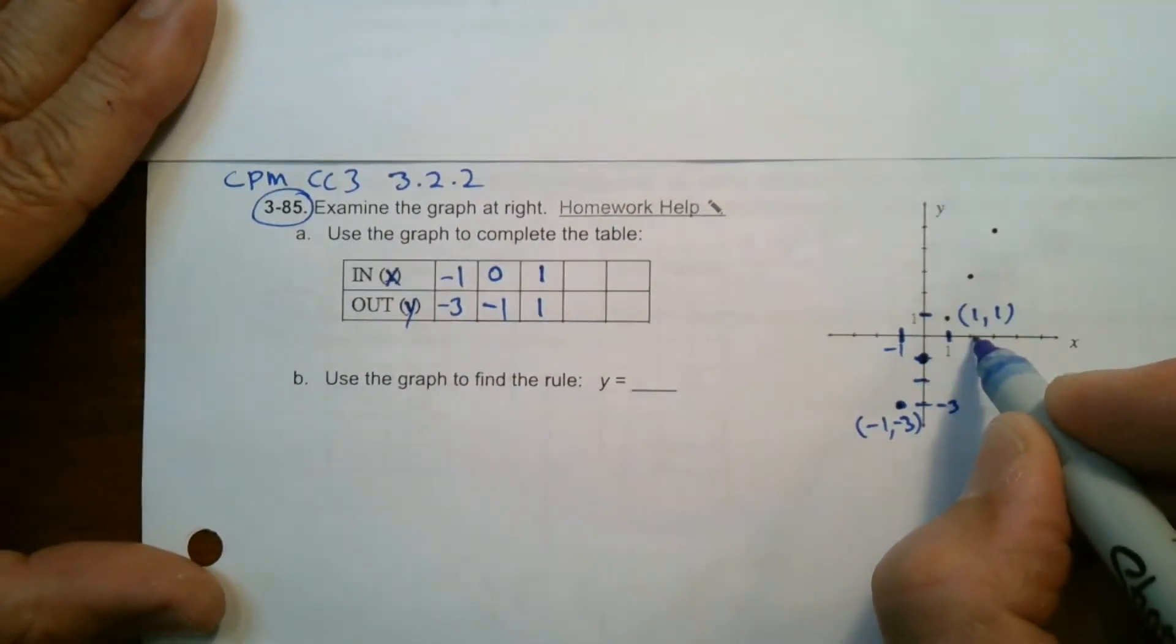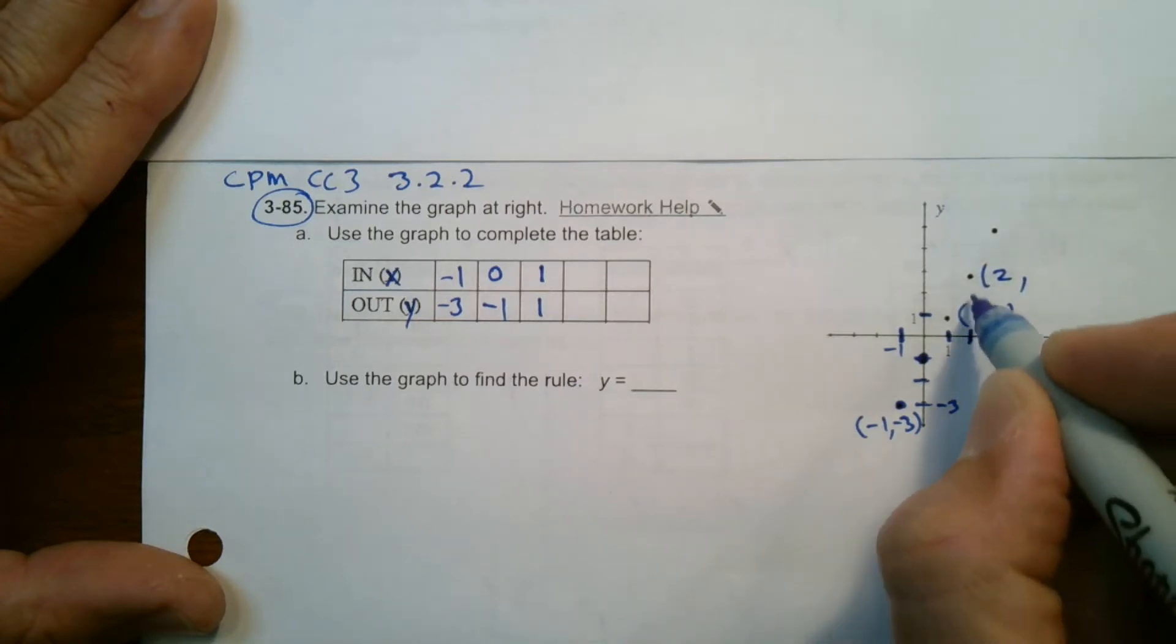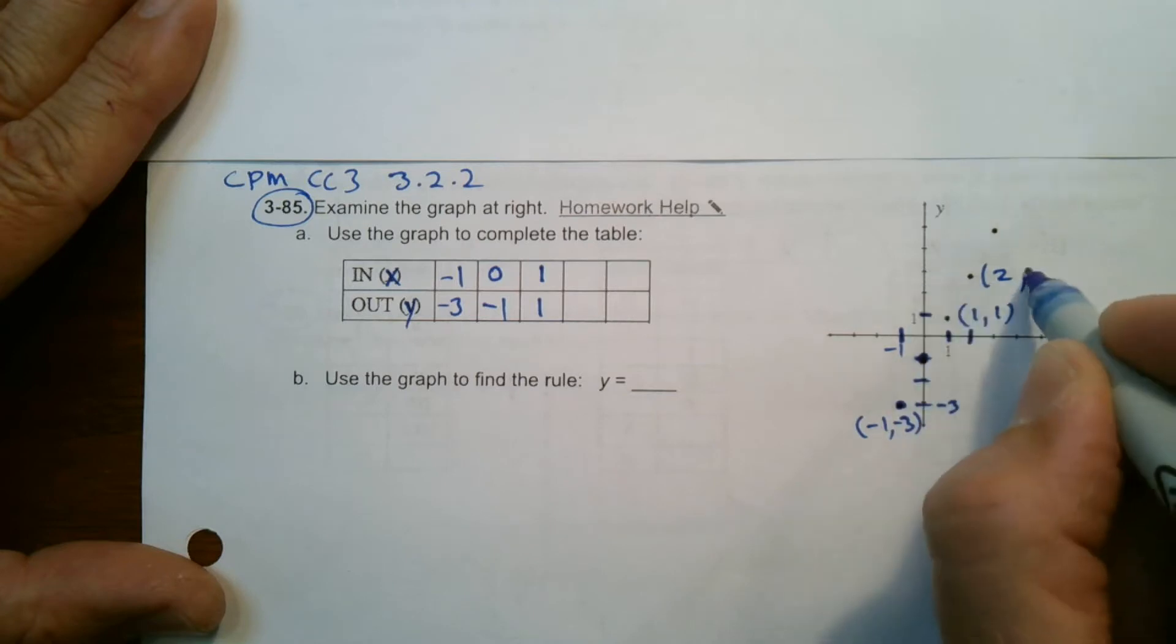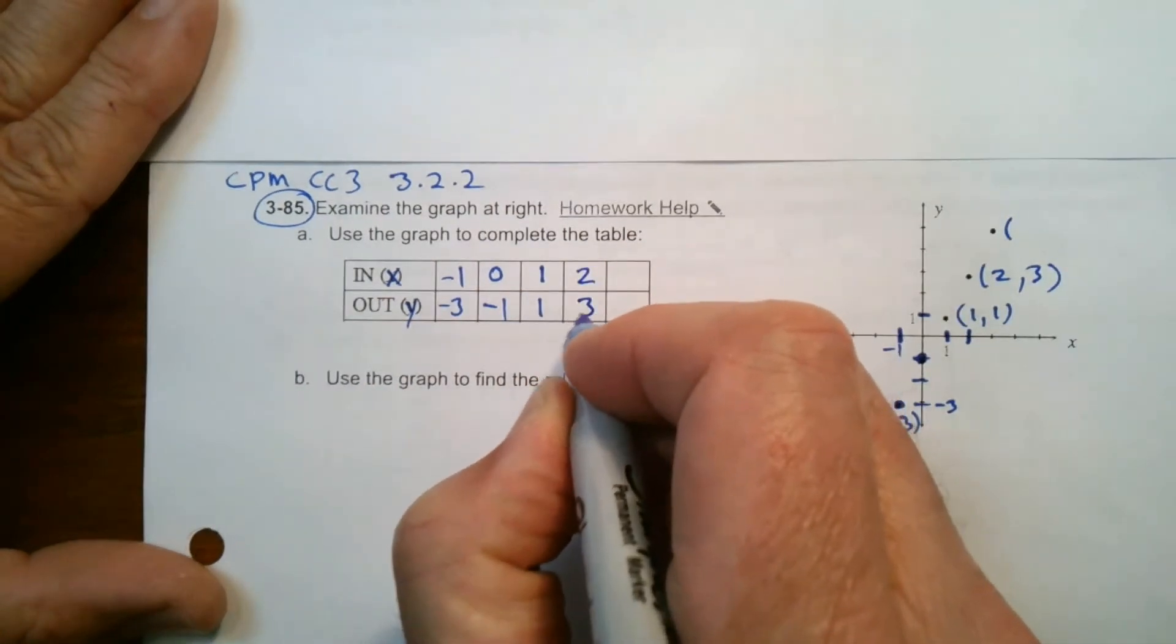This point here looks like it's at 2 on the X, right? Right here on the X is 2 and then 1, 2, 3 on the Y. So that would be 2, 3 in my table.